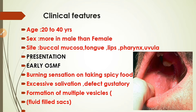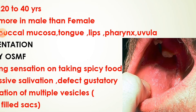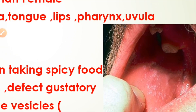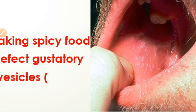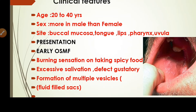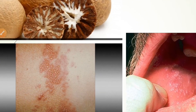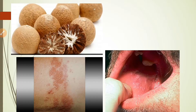In the early stage, there is a burning sensation when taking spicy food. The patient also feels excessive salivation and defective gustation — they cannot taste food properly. There is also formation of multiple vesicles, which are fluid-filled raised areas, as visible in pictures showing tiny fluid-filled vesicles in the oral cavity.